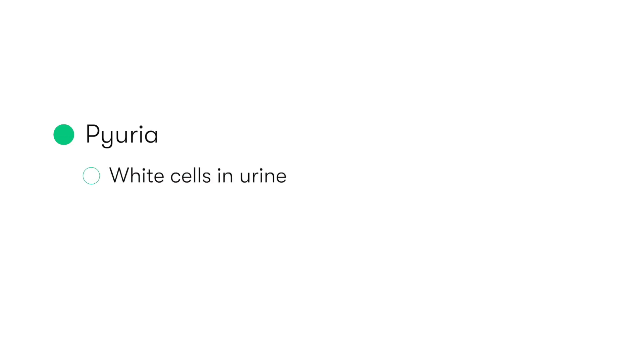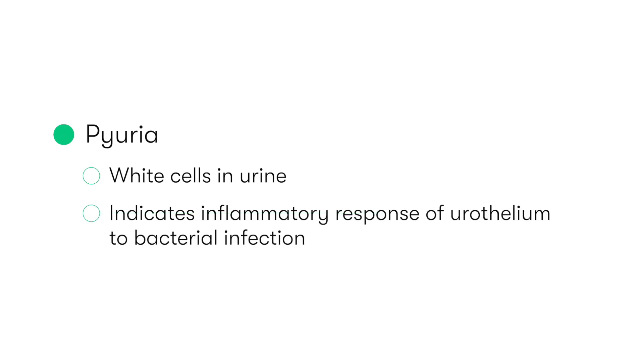Pyuria is the presence of white cells in the urine, and it occurs as a result of the inflammatory response of the urothelium due to the presence of bacterial infection.